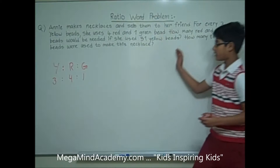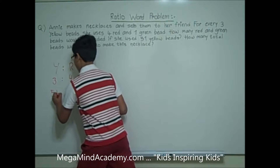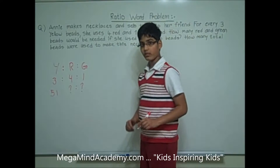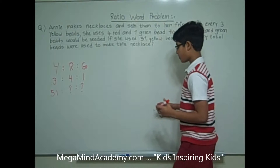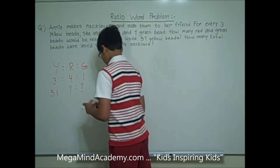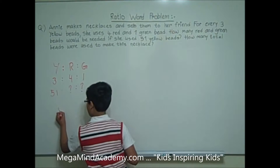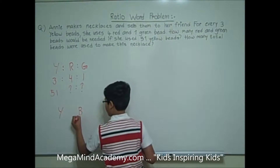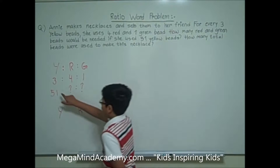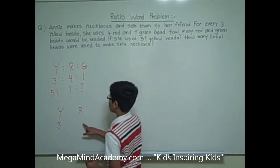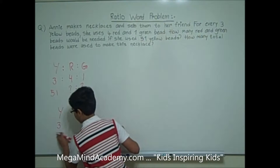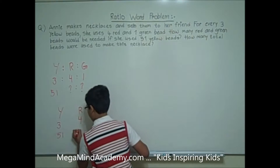For 51 yellow beads, how many red and how many green beads are there? To solve this part of the problem, we need to use cross multiplication. That means we have 2 columns: the yellow column and the red column, because we are going to try to figure out how many red beads there are. For every 3 yellow beads, she uses 4 red beads. For 51 yellow beads, how many red beads does she use?